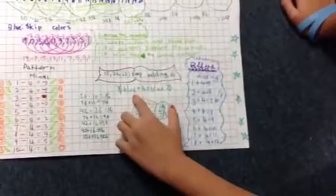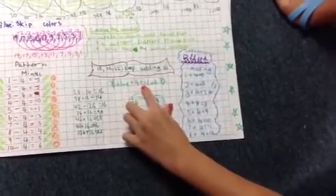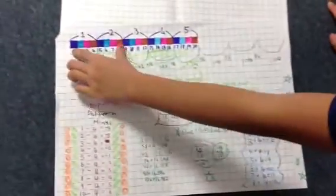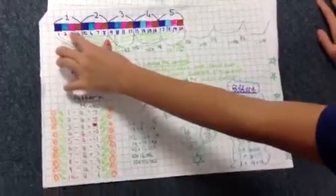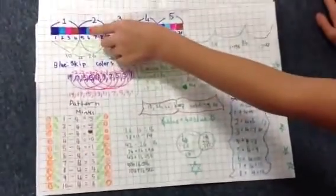And then here is like blue. Like, blue plus 4 equals blue. Like here is blue, and you plus 4: 1, 2, 3, 4. And then here is 4, and then here is blue.